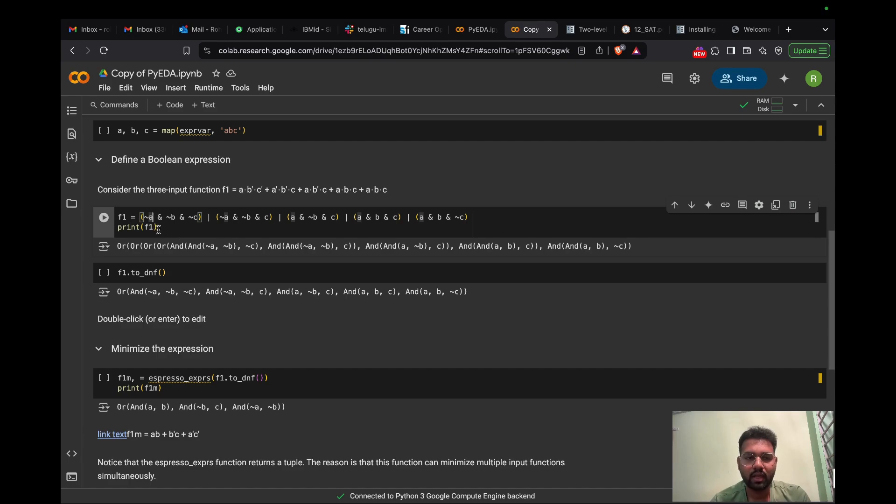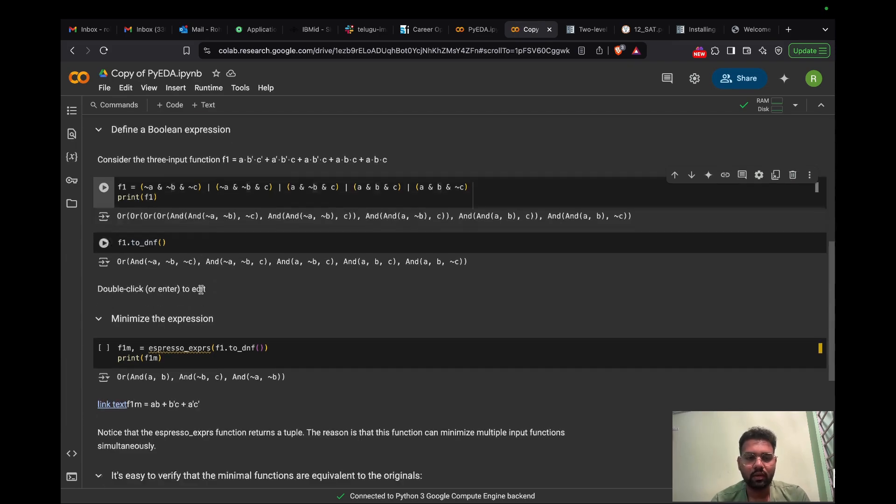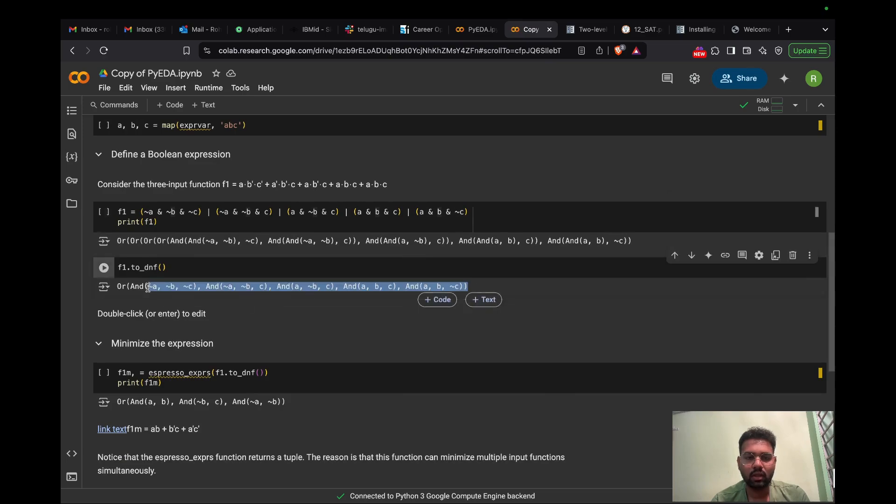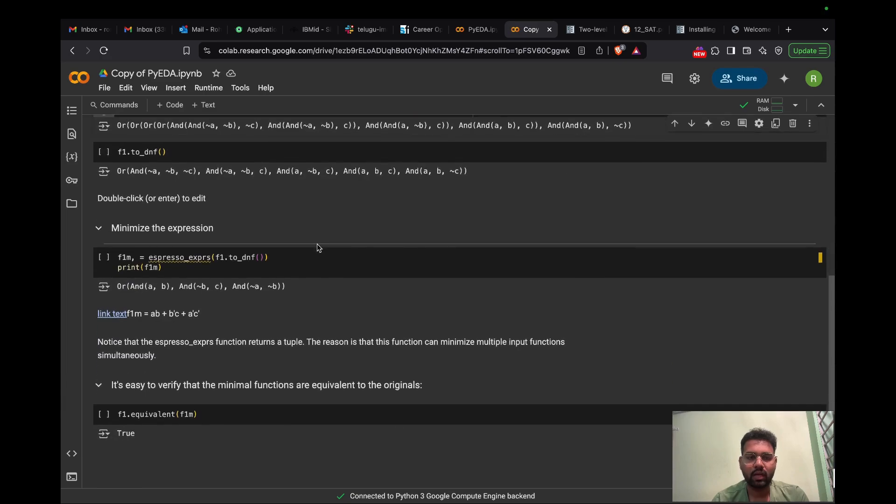After printing it, we can see here we used four bars, so we can see four OR functions. In each term, we can see two ampersand functions. This function is represented in PyEDA software. We convert it to DNF. After converting it, we can see this is the output, and this is exactly the same as the given function or expression.